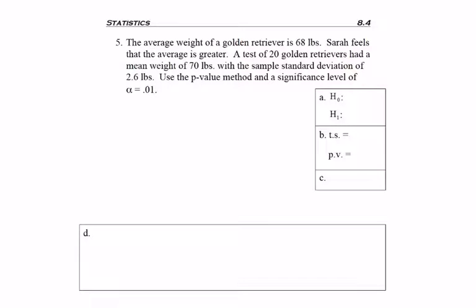Use the p-value method and a significance level of alpha equals 0.01. So it's a little redundant since alpha and the significance level are the same thing. Now it starts off saying the average weight of a golden retriever, but as we'll find out in the next section, the test isn't always about the average.